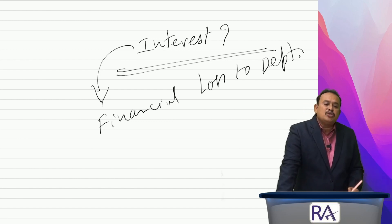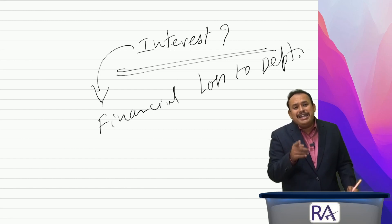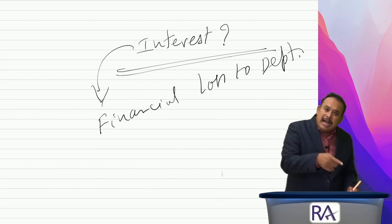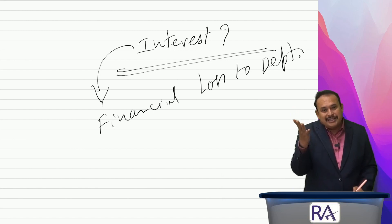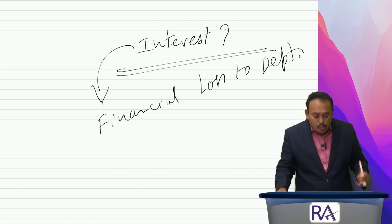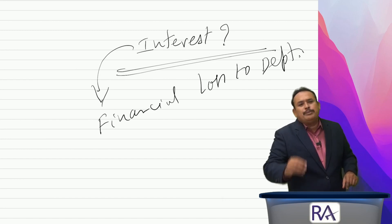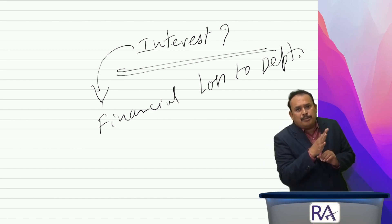If there is no financial loss to the department and it is only a procedural lapse, for a procedural lapse the department has no right to charge interest. What do we mean by a procedural lapse? For example, Section 125 talks about the general penalty.